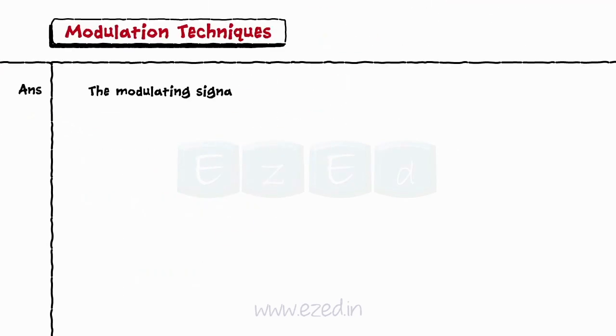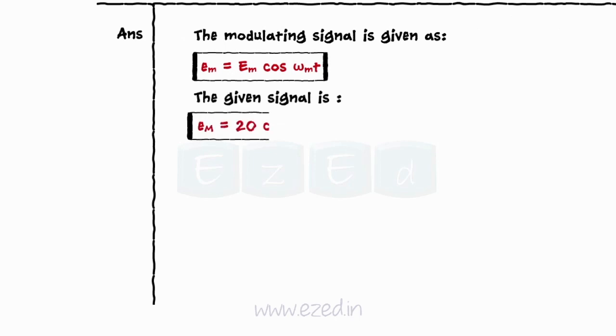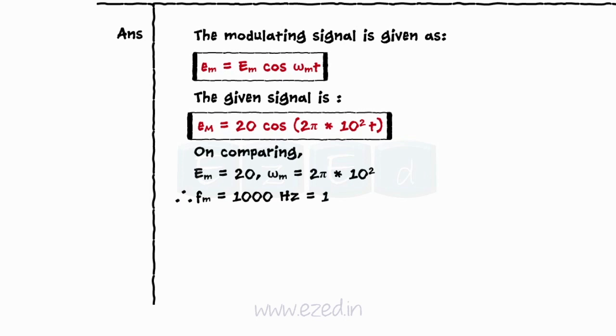The standard equation for modulating signal is Em = Em cos(ωm t). The equation of the modulating signal is Em = 20 cos(2π × 10³ t). On comparing, we get Em = 20, ωm = 2π × 10³, thus fm = 1000 Hz = 1 kHz.